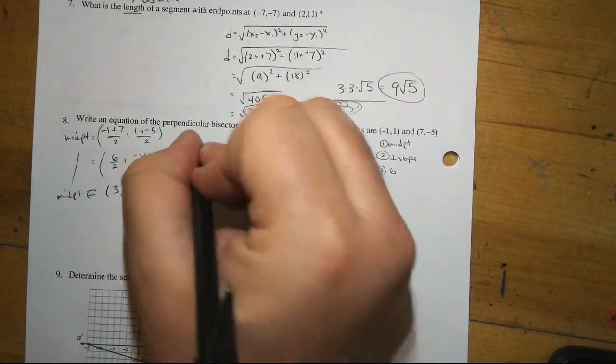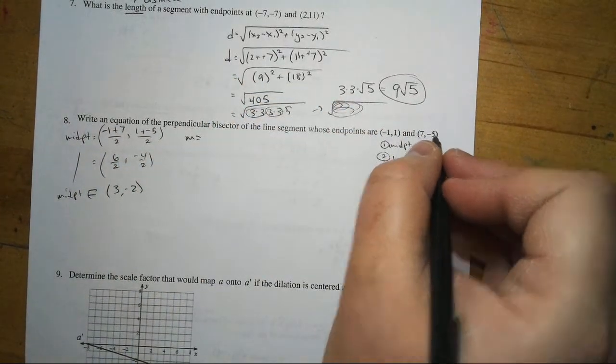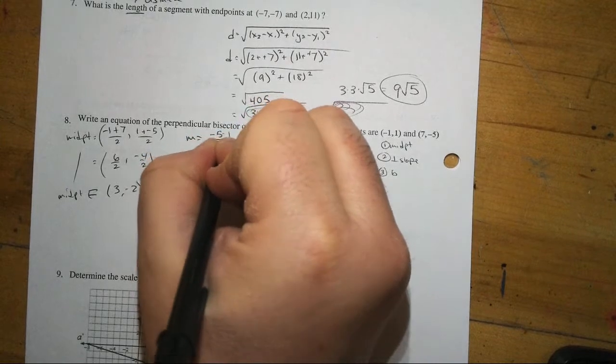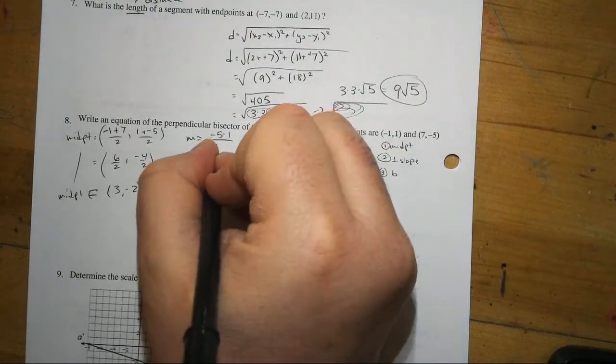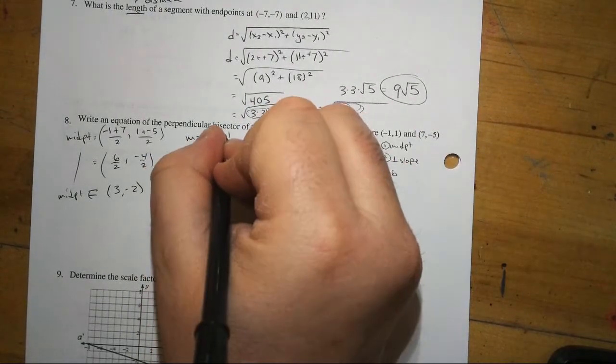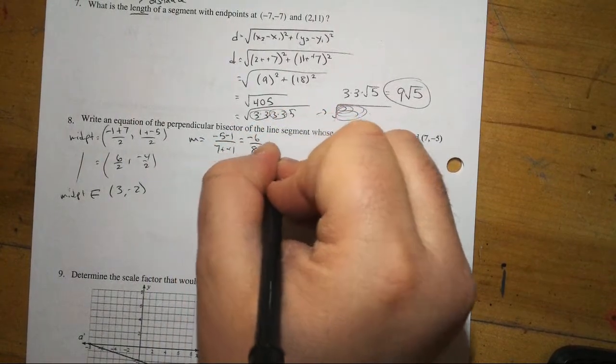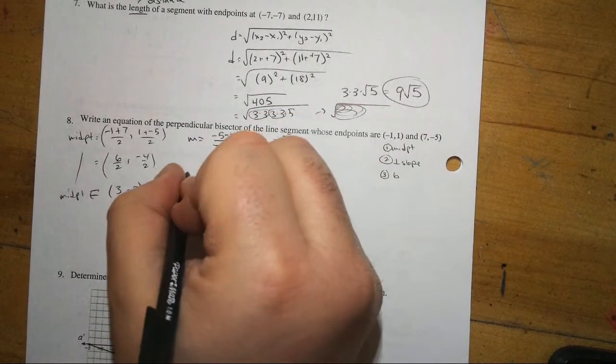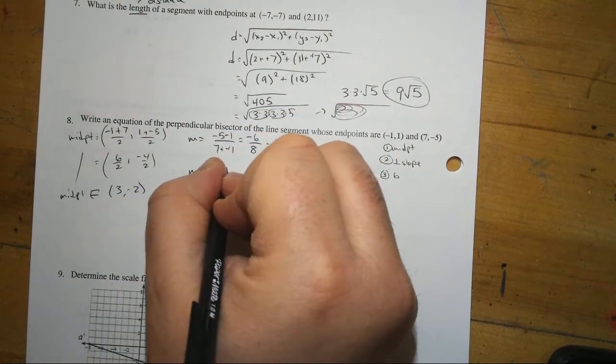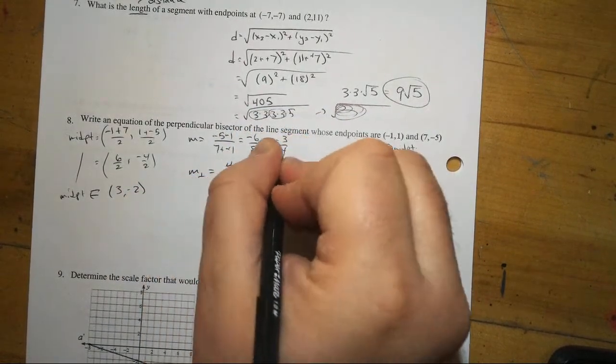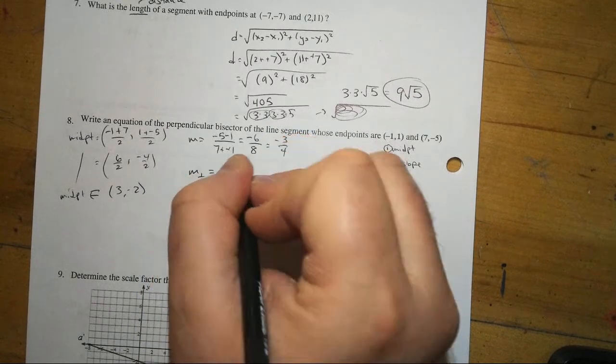Which is y2 minus y1. So, negative 5 minus 1 over x2, 7 minus x1, negative 1. So, this is going to be negative 6 over 8, which is also equal to negative 3 over 4. And then our perpendicular slope is a negative reciprocal. So, it's positive. And then 4 over 3.